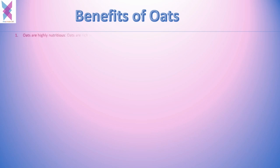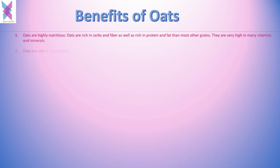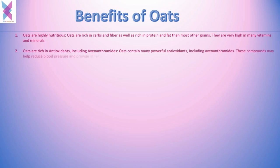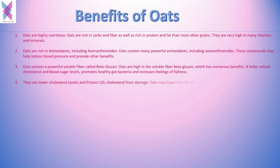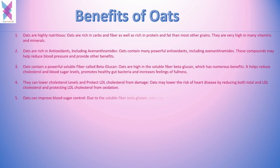Oats are incredibly nutritious, containing many minerals, vitamins, antioxidants, and plant compounds. They contain a powerful fiber called beta-glucan which can help address many vitamin deficiencies. Whole oats are high in antioxidants and beneficial plant compounds called polyphenols, most notably a unique group of antioxidants called avenanthramides, which are almost solely found in oats. These compounds may help reduce blood pressure and provide many other benefits.